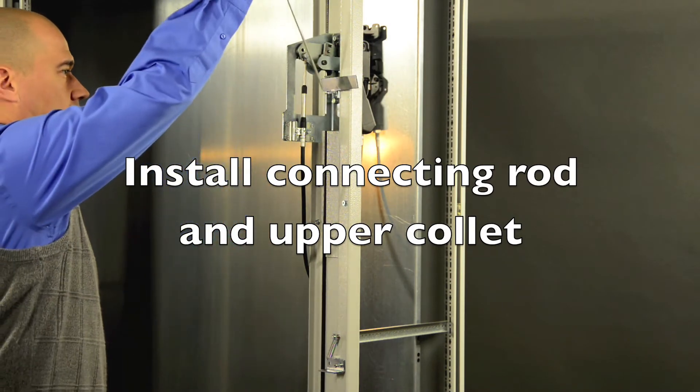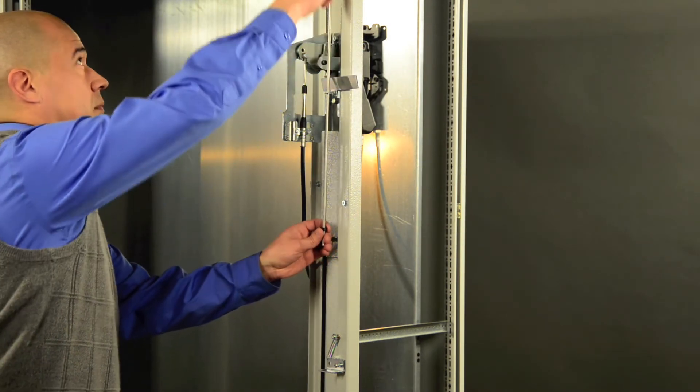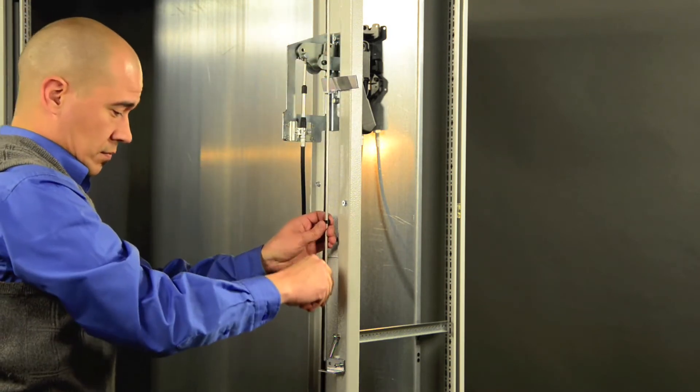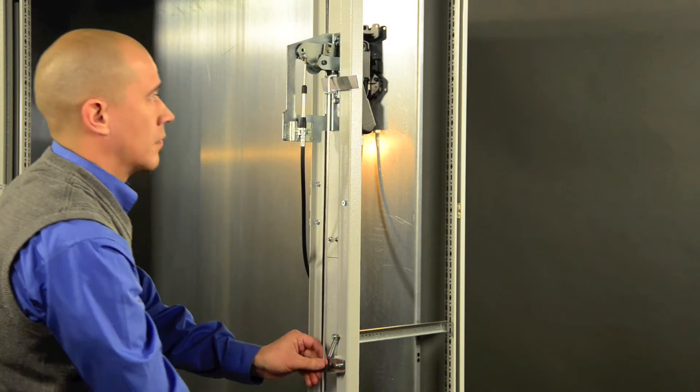Starting above the defeater lever, slide the connecting rod first down through the defeater lever and then through one of the supplied collets. Continue inserting the connecting rod down through the activator bracket.